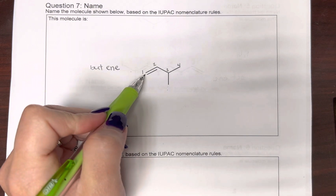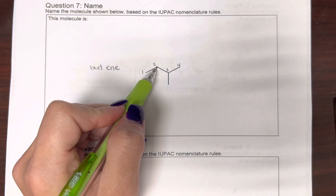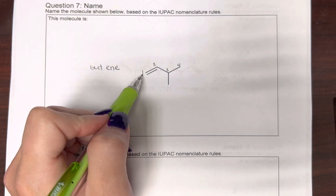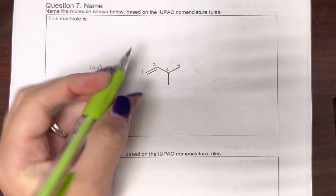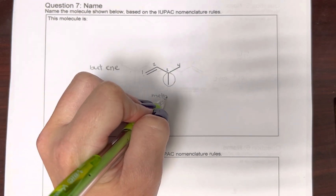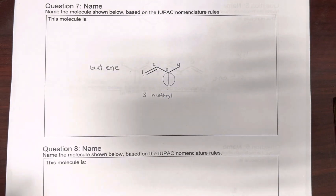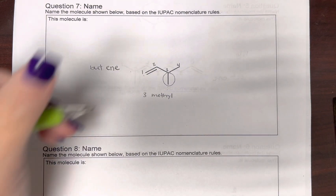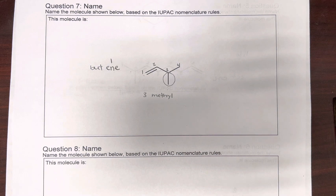Okay. Here, I started from the left because the double bond is on carbon one. And then I also have a methyl group on carbon three. So our double bond is on carbon one and our methyl group is on carbon three.